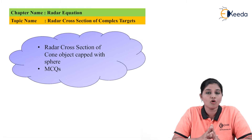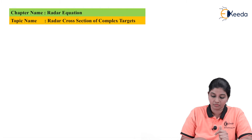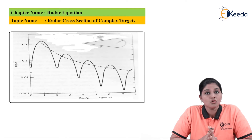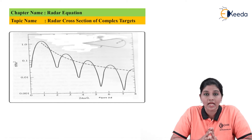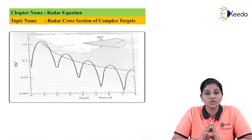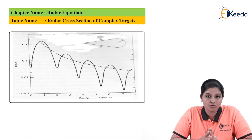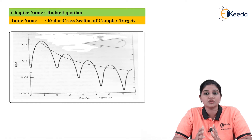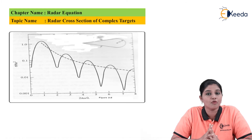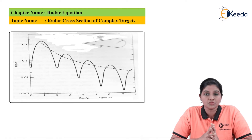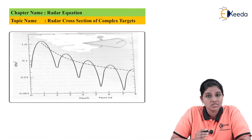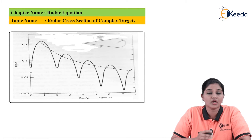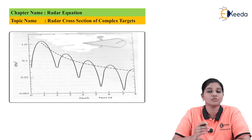Now let's have a look at the figure for calculation of RCS value. The figure shows a plot of nose-on RCS with an angle of 30 degrees as a function of 2πa/λ. Here, the value of a is nothing but the radius of the sphere, and it is normalized with the area of the sphere, that is 4πa². We can say that the value of RCS becomes maximum if it is viewed from the front-end side rather than viewing it from the rear side.